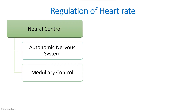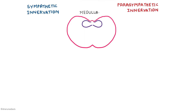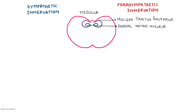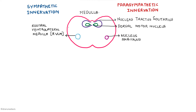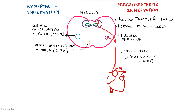The medulla controls both sympathetic and parasympathetic innervation to the heart and blood vessels. Key centers include the nucleus tractus solitarius, dorsal motor nucleus, nucleus ambiguus, rostral ventrolateral medulla (RVLM), and caudal ventrolateral medulla (CVLM). For parasympathetic innervation, the nucleus tractus solitarius innervates the dorsal motor nucleus, which sends impulses to the nucleus ambiguus, and via the vagus nerve acts on the heart to decrease heart rate.